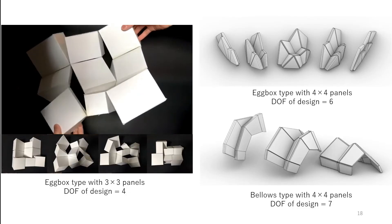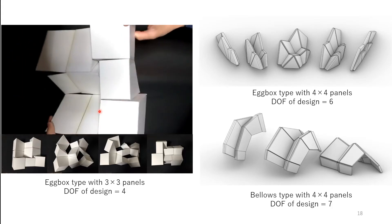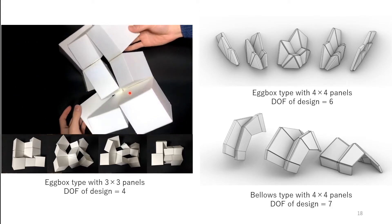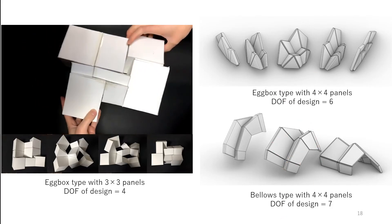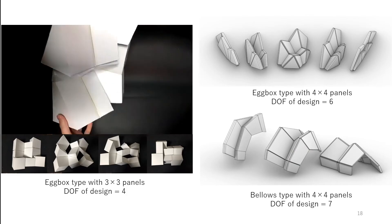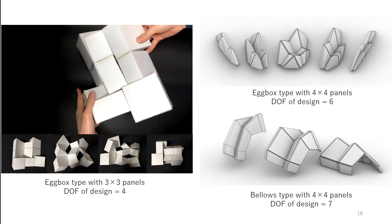We show you a variation of the form. This, on the left, is a very thick model with 3x3 panels. And these, on the right, are with 4x4 panels. The degree of freedom depends on whether you choose the eggbox or bellows type, because the number of saddle-like vertices can change.